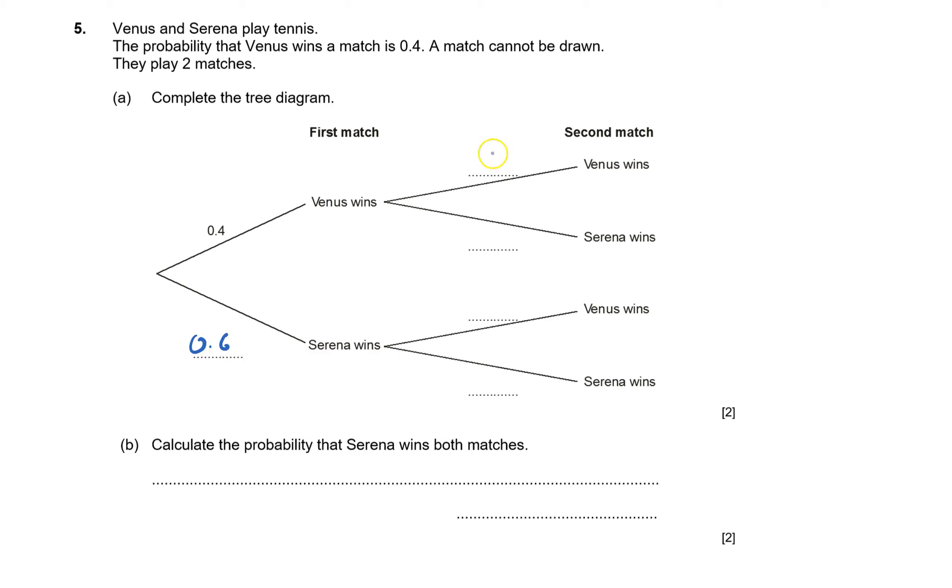This doesn't change. Sometimes the probabilities might change - if she wins one, she may be more likely to win the next one - but it doesn't say that, so we have to assume that the probability is always 0.4 that Venus wins and 0.6 that Serena wins.